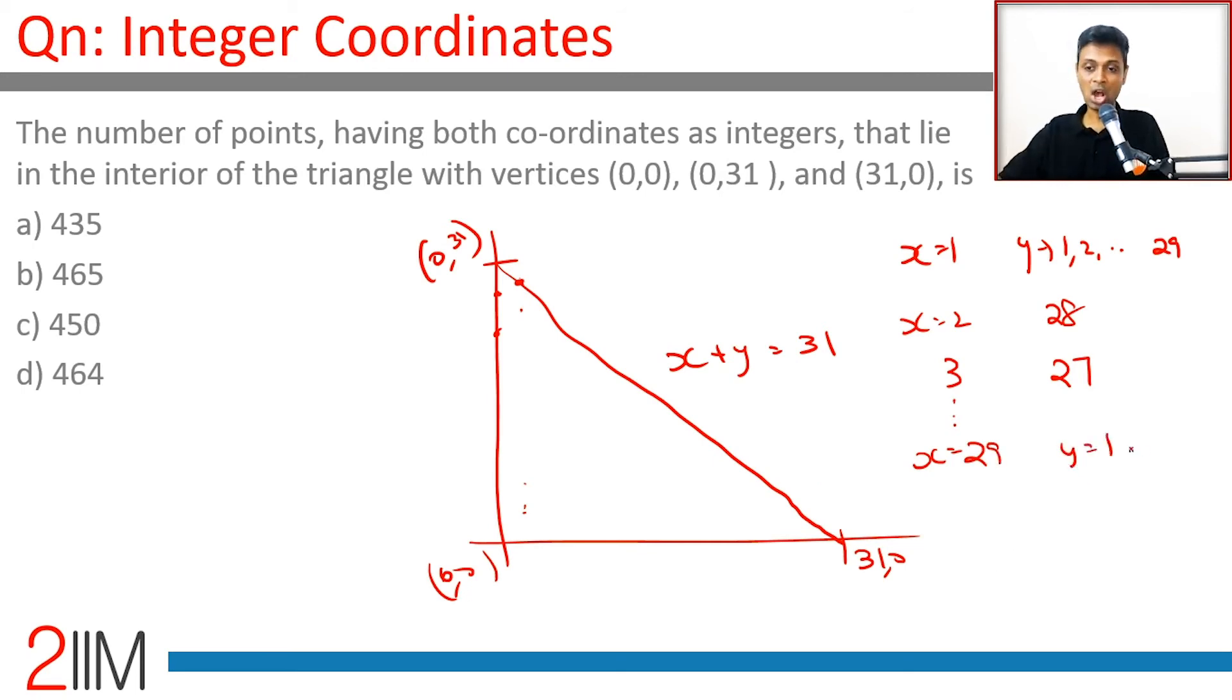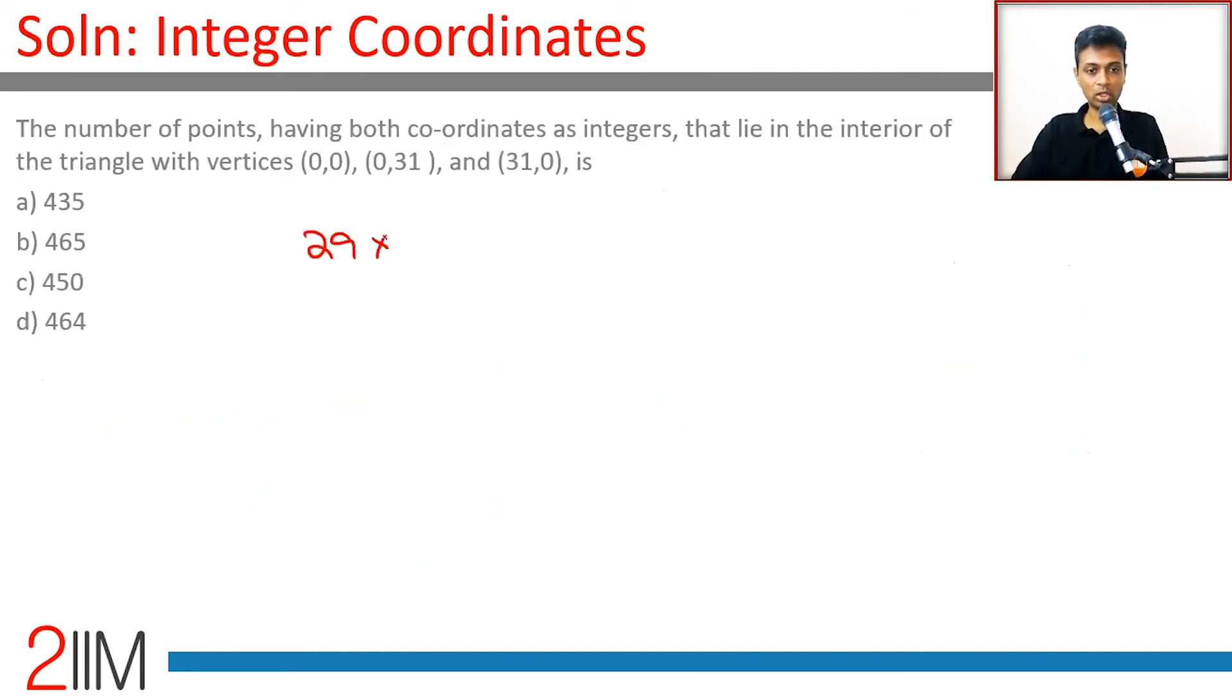And so the number of possible values is 1 plus 2 plus 3 plus 4, all the way till 29. That is the famous formula which we know how to do: 29 into 30 by 2, which is 29 into 15. 15 nines are 135, plus 135, equals 435. Wonderful.